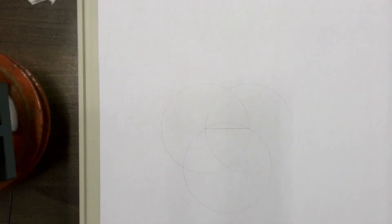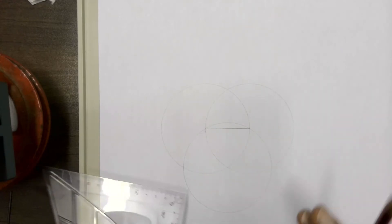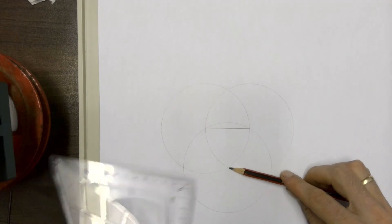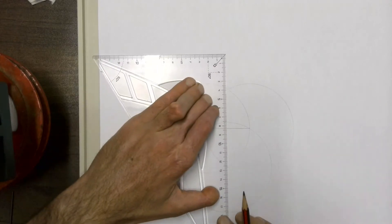Once complete with that, join the top intersection point and the bottom intersection point using a construction line.